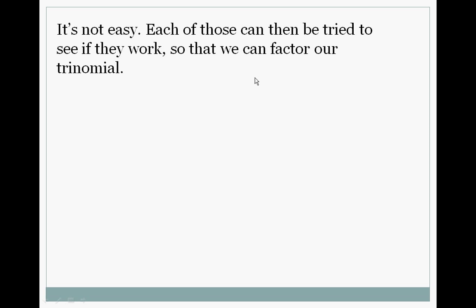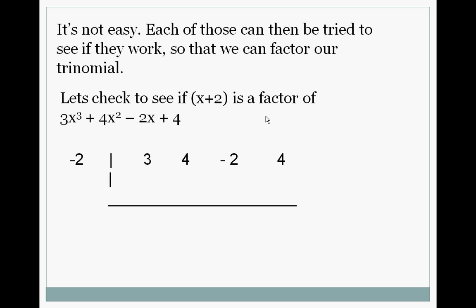It's not easy because there's so many that can be tried. But let's try x+2 to see if it goes in evenly. We'll use synthetic division. Bring down your leading coefficient. Multiply. Add -2. We get 4 and 2. And we multiply -4 and we do get 0. So we find out that x+2 did go in evenly. And now we have 3x²-2x+2.